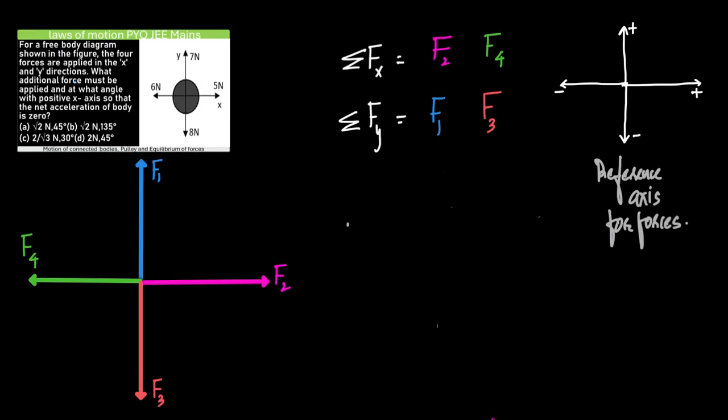For the free body diagram shown in the figure, four forces are applied in x and y directions. What additional force must be in the positive axis so that the net acceleration of the body is equal to zero?